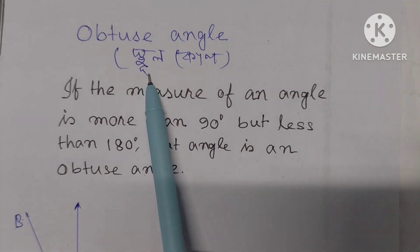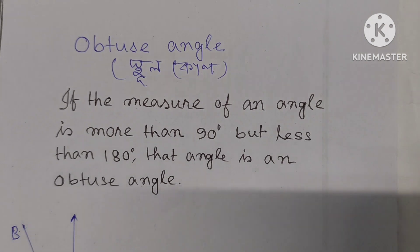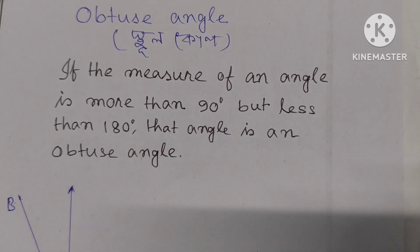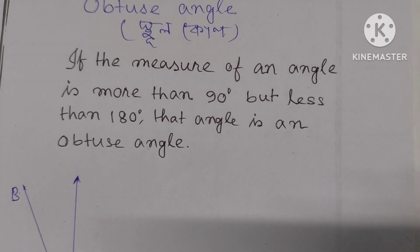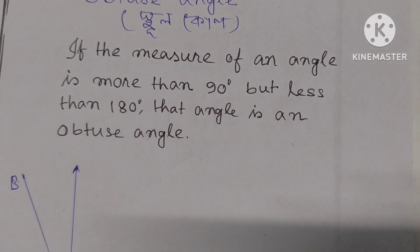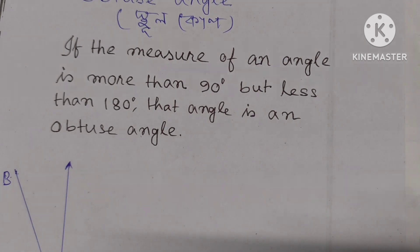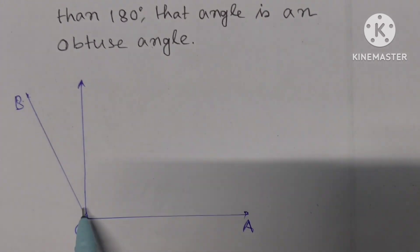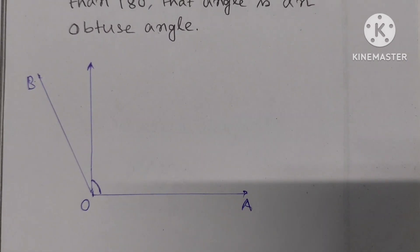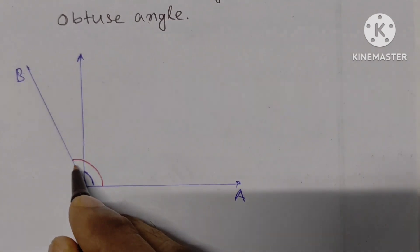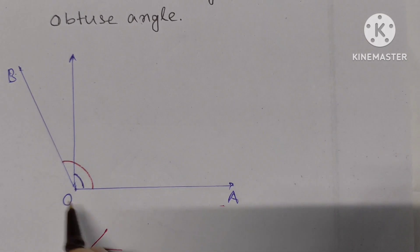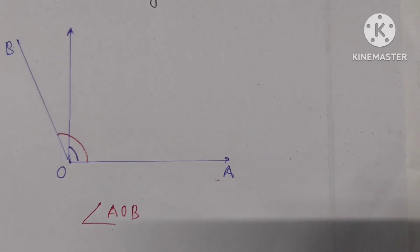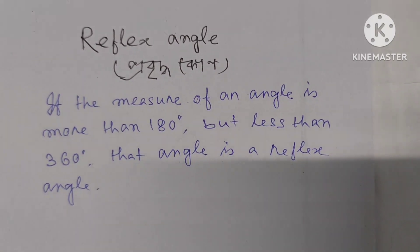An obtuse angle means: if the measure of an angle is more than 90 degrees but less than 180 degrees, that angle is an obtuse angle. Angle AOB is an obtuse angle.